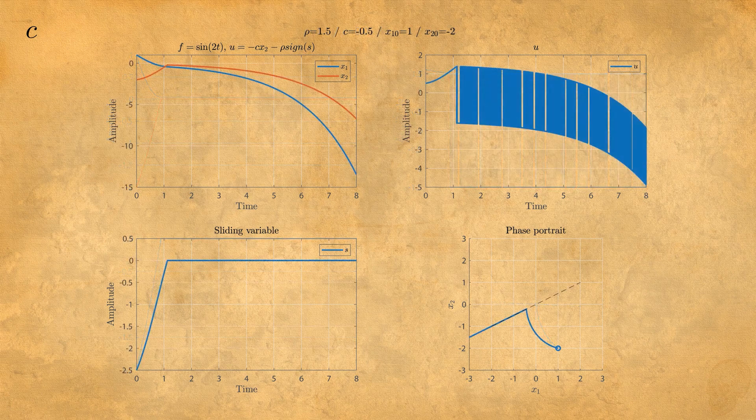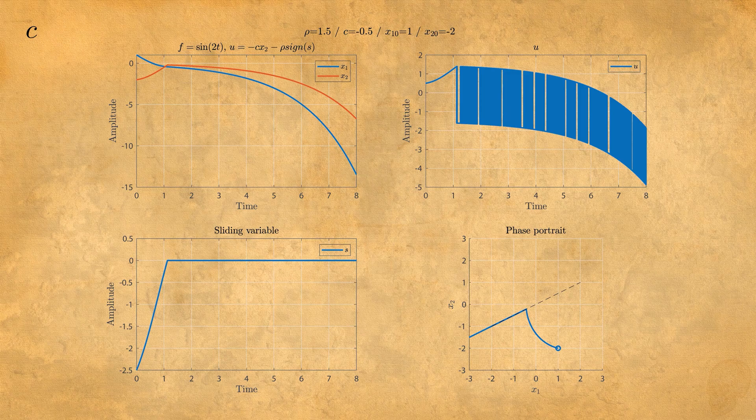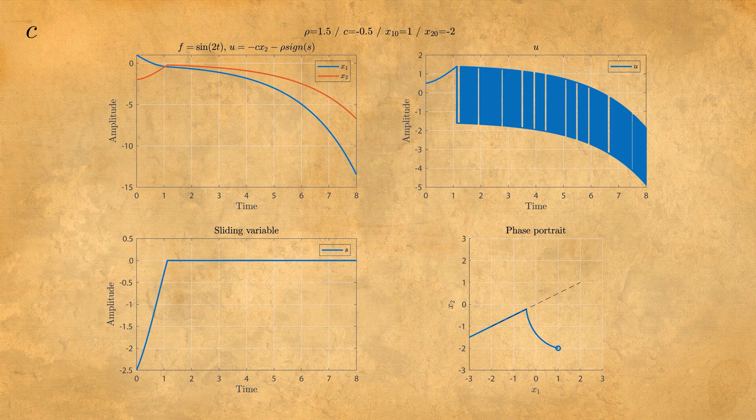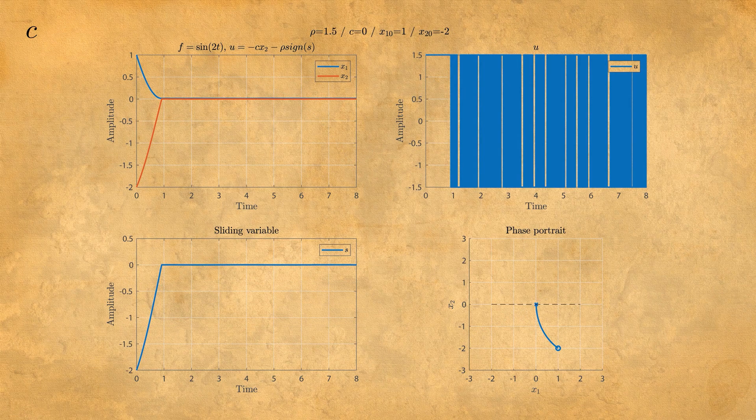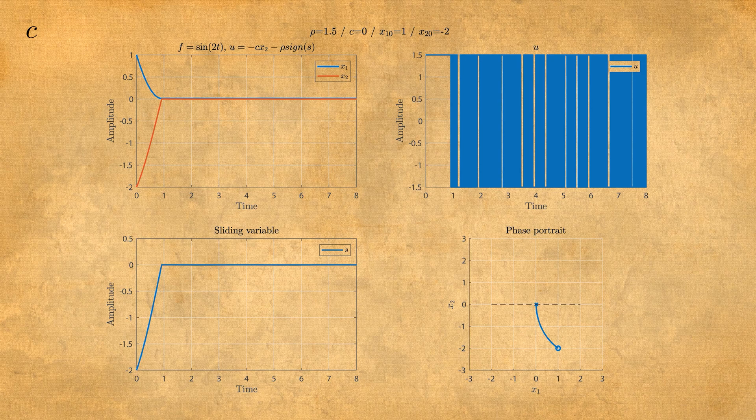If C becomes negative, the system becomes unstable. If it becomes zero, with this example it reaches stability, but normally it's asymptotic stability which means oscillation.